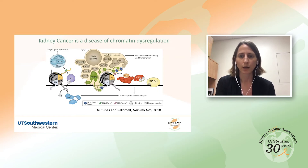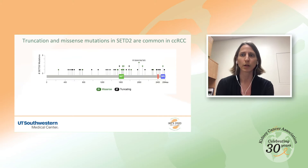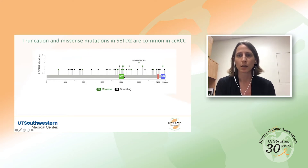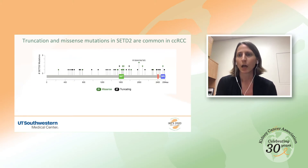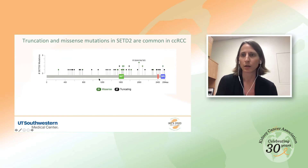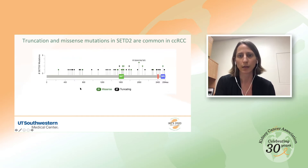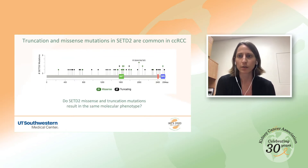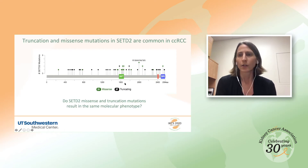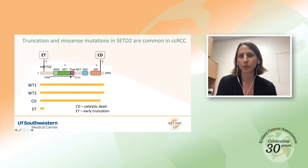We started looking at the kinds of SETD2 mutations present in kidney cancer, and a couple of things struck us. One is that many of these mutations are missense mutations in the SET domain — the particular part of the protein responsible for transferring the methyl group from SAM to histone proteins. This makes sense if that enzymatic activity is important for the cell. We also noticed many mutations result in early truncation of the protein along the length of SETD2. Our initial question was: are these mutations the same? Is loss of enzymatic activity the same as losing the protein itself?